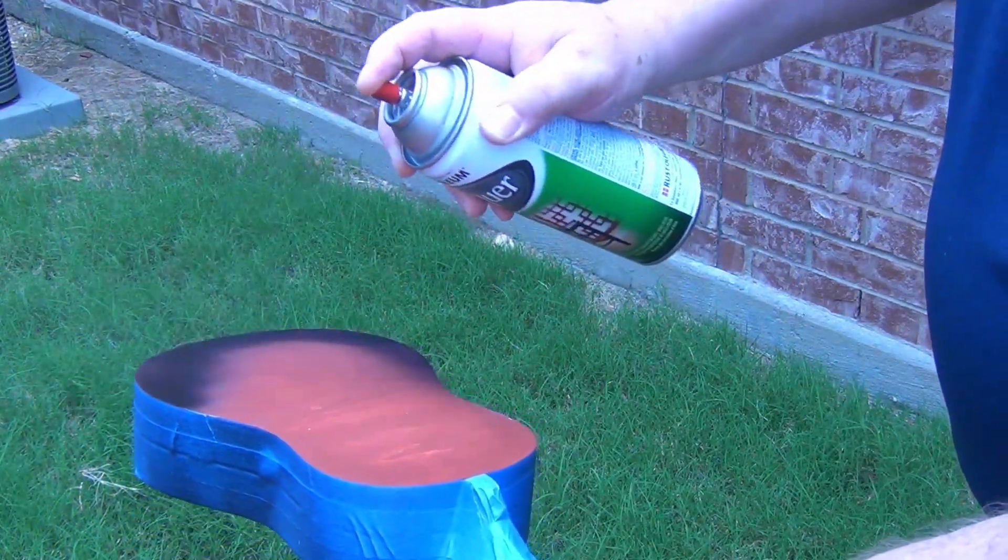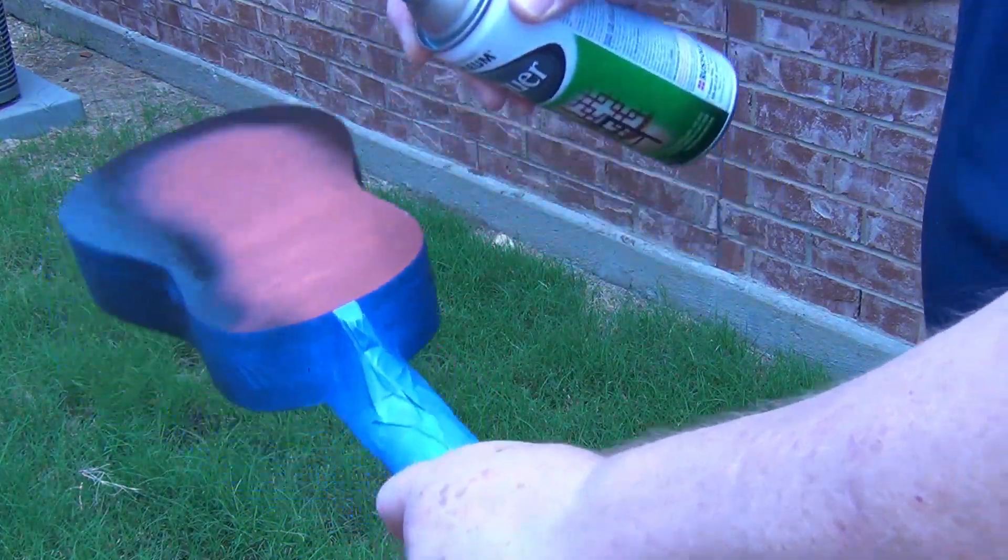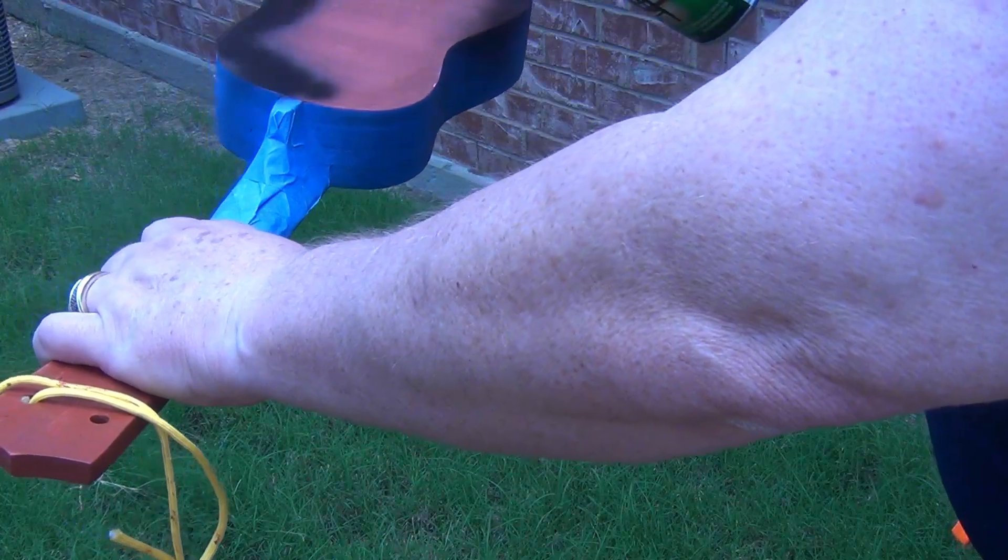Using a can of black spray paint, I worked my way around the edges of the ukulele, attempting to make a sunburst pattern.